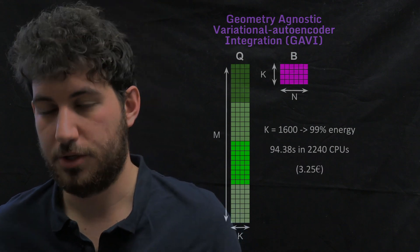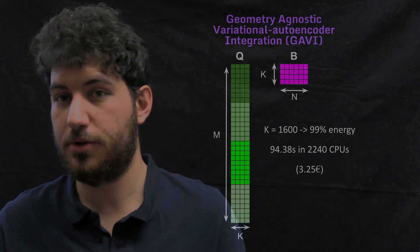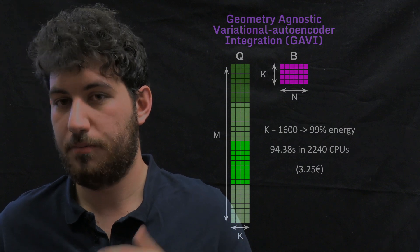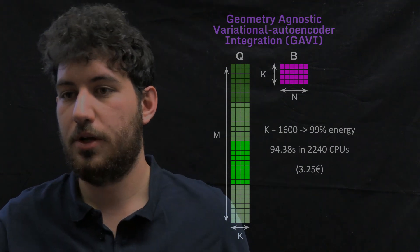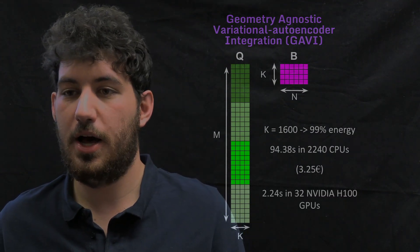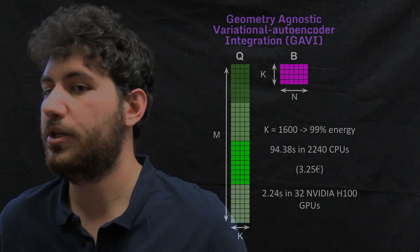We could also go to GPUs, because Pylom allows to do this operation in parallel when using GPUs. So in that case, it takes two seconds when using 32 NVIDIA H100 GPUs, which is still a lot of computational power, taking into account how powerful NVIDIA H100 are.